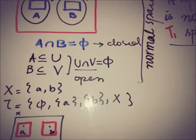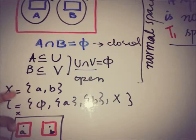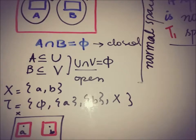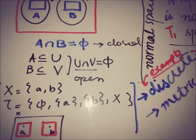Another very common example of a normal space is a metric space — a metric space is a normal space. This discrete space with at least two elements is also a normal space, and a metric space is also a normal space. The explanation of how a metric space is a normal space is quite time-consuming, so it won't be covered here.